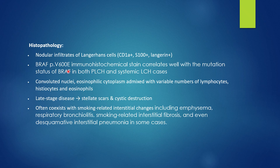As disease progresses, there is more fibrosis with stellate scar and cystic destruction of the lung, and it loses its centrilobular location. There may be background changes of smoking-related interstitial disease, like emphysema, respiratory bronchiolitis, smoking-related interstitial fibrosis, or even a DIP-like pattern.